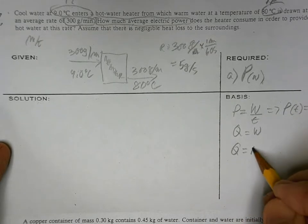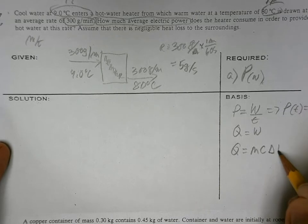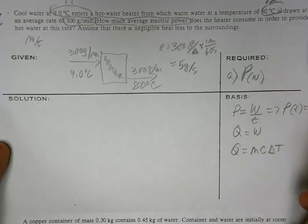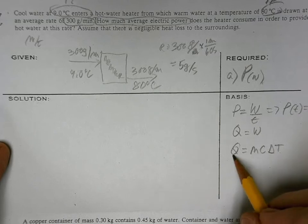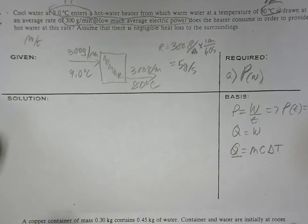Q is equal to MC delta T, because there is a gradient, there's a temperature change, so this is the way we compute for our heat.